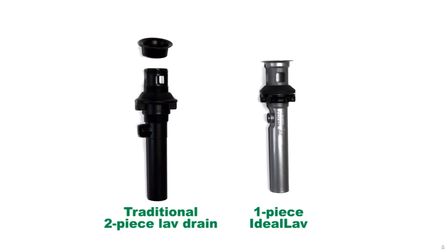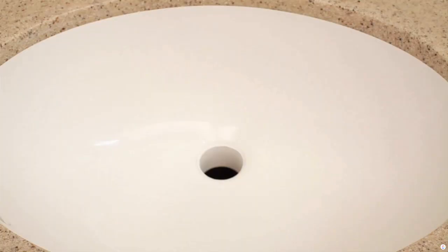The one-piece ideal lav drops through the top of the sink, making it easier to install. The ideal lav installs like this.